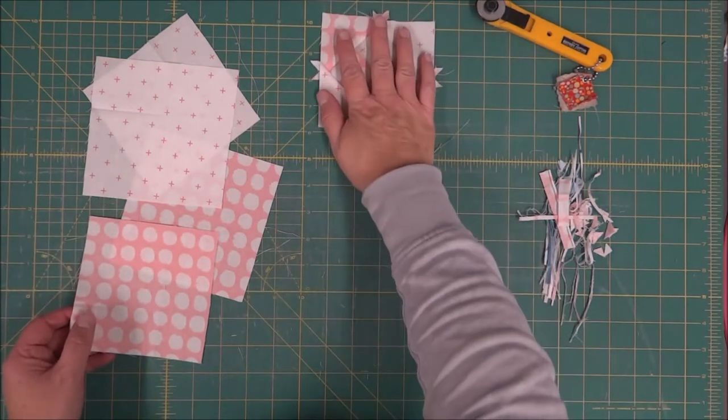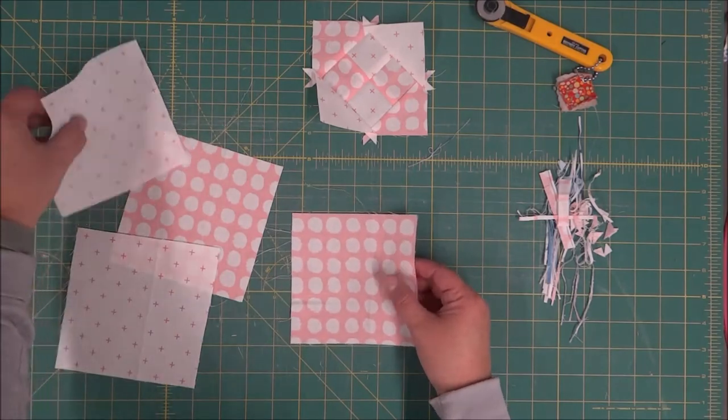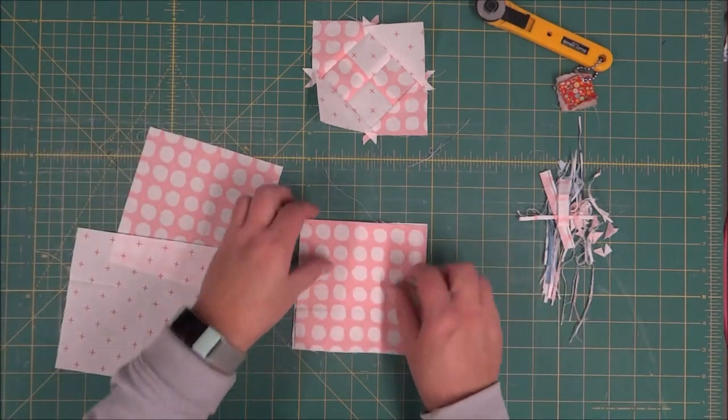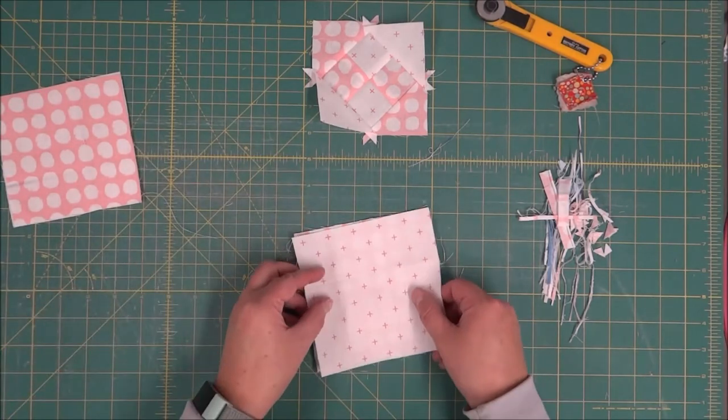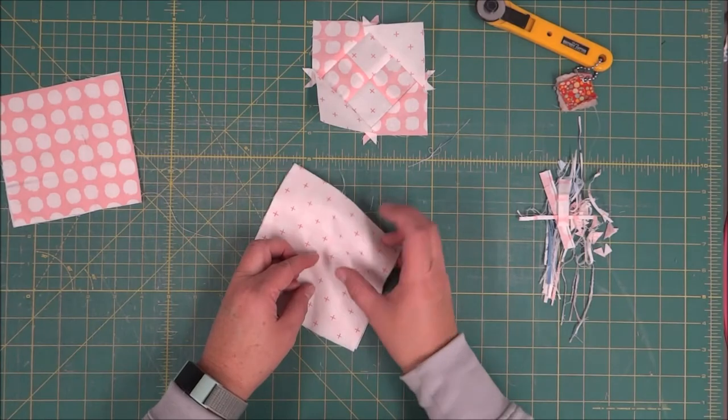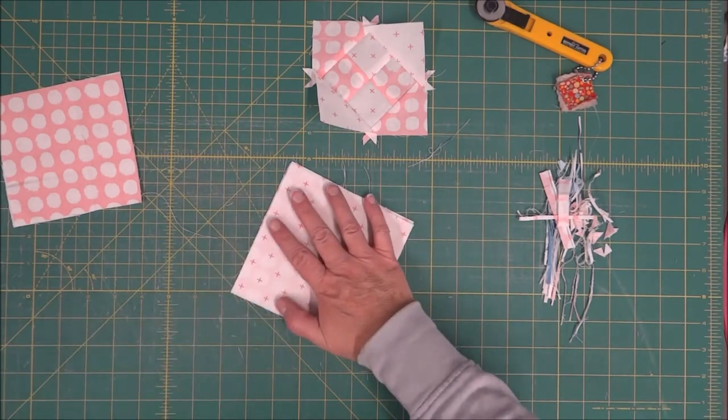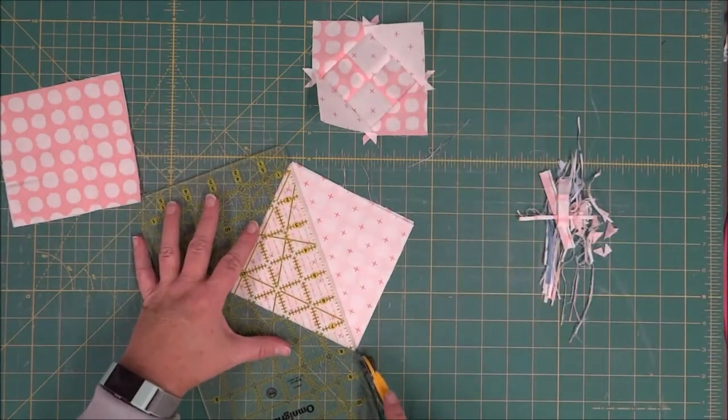Alright, for the next step, we are going to need to cut again our triangles for this. So we are going to set these ones aside, make sure we have the right ones, right sides up if you're cutting them together. For this, it's required that we cut diagonally twice across this to get the correct size for this block.